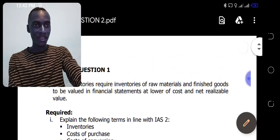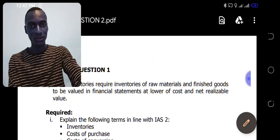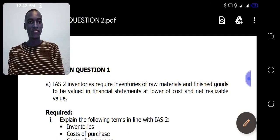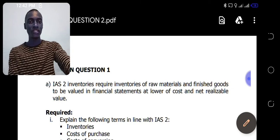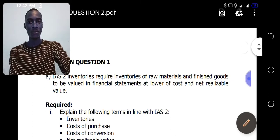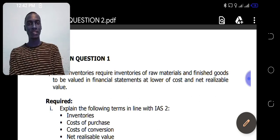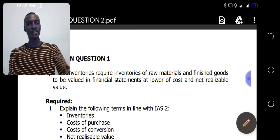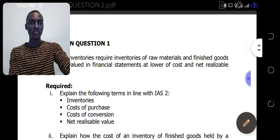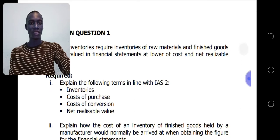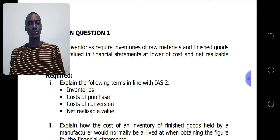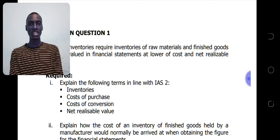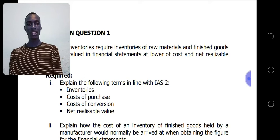We have the first revision question. IAS2 inventories requires inventories of raw materials and finished goods to be valued in financial statements at the lower of cost and net realizable value. In this question, you are required to explain the following terms in line with IAS2 inventories: define what inventories are, talk about costs of purchase, costs of conversion, and net realizable value.